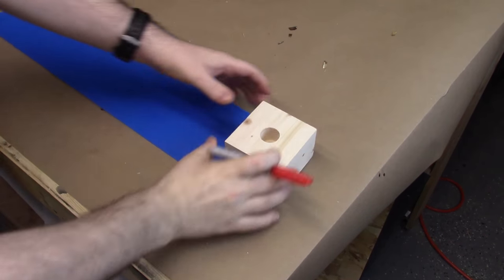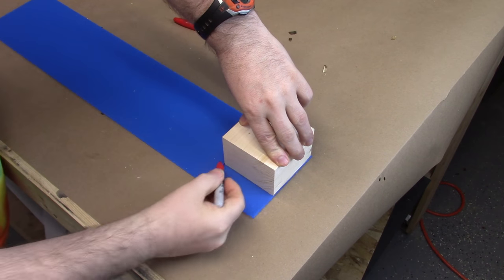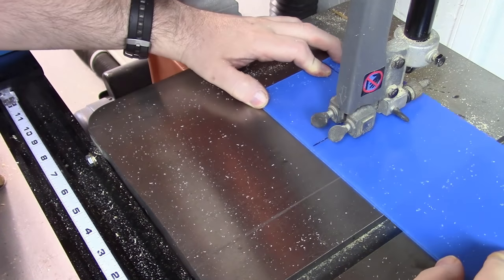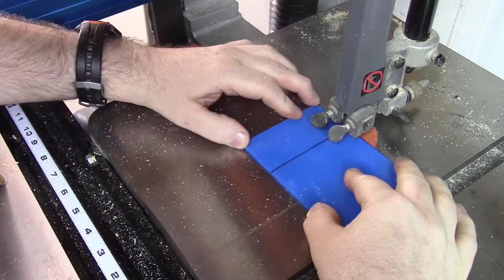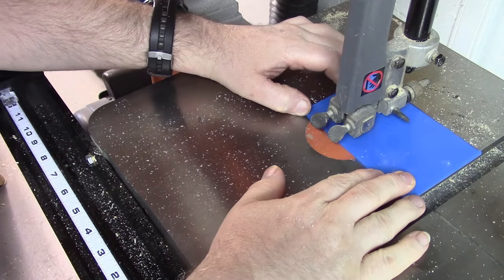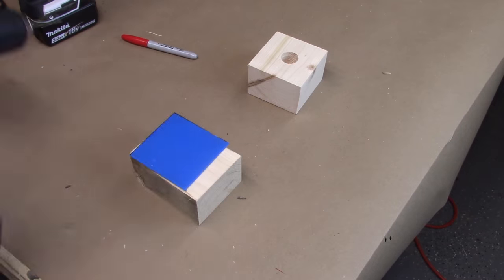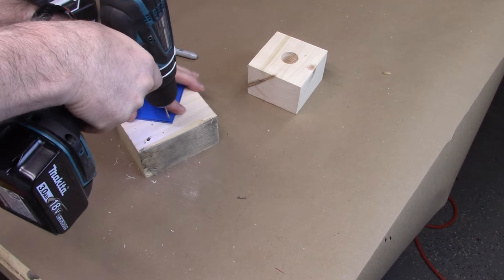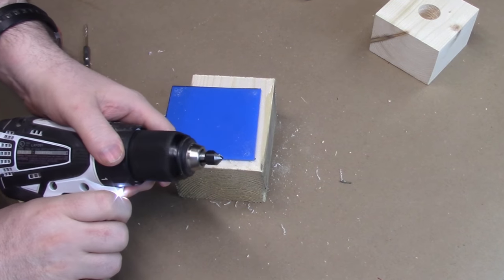All right, now let's get out a nice thin piece of plexi and mark it off so I can make a little top for this. Let's drill out some pilot holes and countersink them.